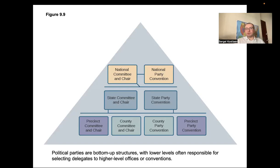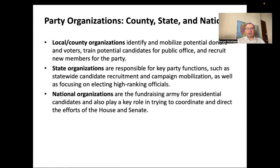National party committees — the Republican National Committee (RNC) and the Democratic National Committee (DNC) — organize the national convention and nominate a candidate for president; this is their main function. State party organizations regulate how primaries and caucuses are conducted and who gets nominated. Local party organizations deal with nominating people for various local offices.